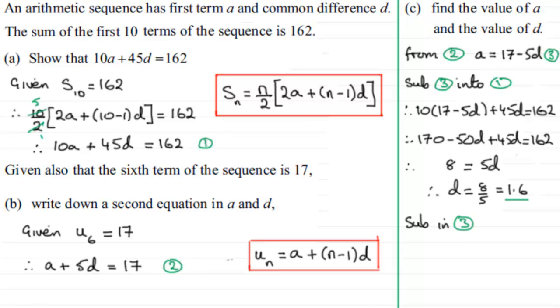And what does that give us? Well, it's going to give us the value of A. So therefore A equals 17 minus 5 times 1.6. Work that out and you end up with A equaling 9. So we've got our two values. A equals 9 and D equals 1.6.